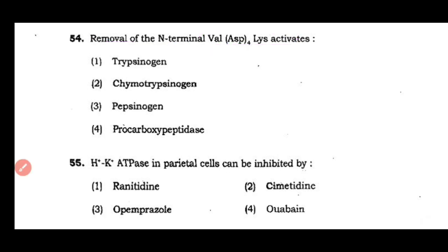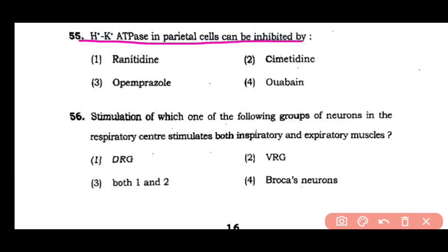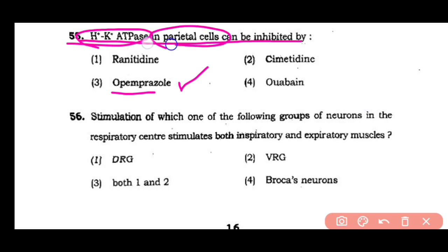Question number 55: Hydrogen-potassium ATPase pump in parietal cells can be inhibited by ranitidine, cimetidine, omeprazole, or ouabain. The correct answer is option 3 — omeprazole inhibits the hydrogen-potassium ATPase pump in parietal cells, while ouabain inhibits the sodium-potassium ATPase pump in parietal cells.